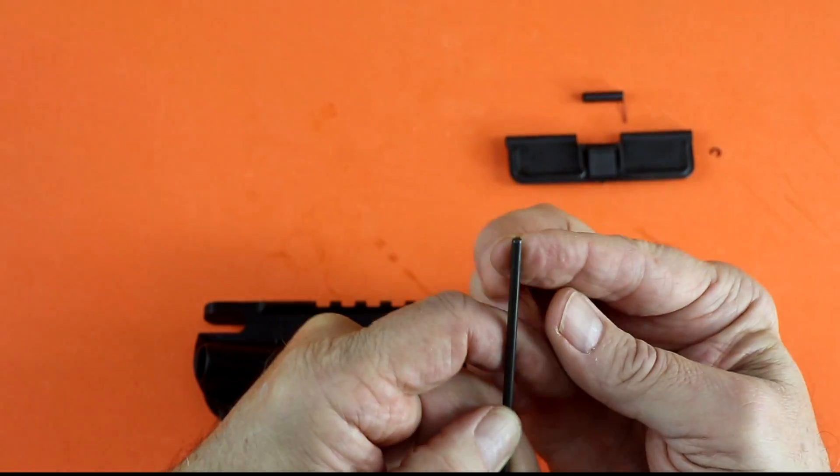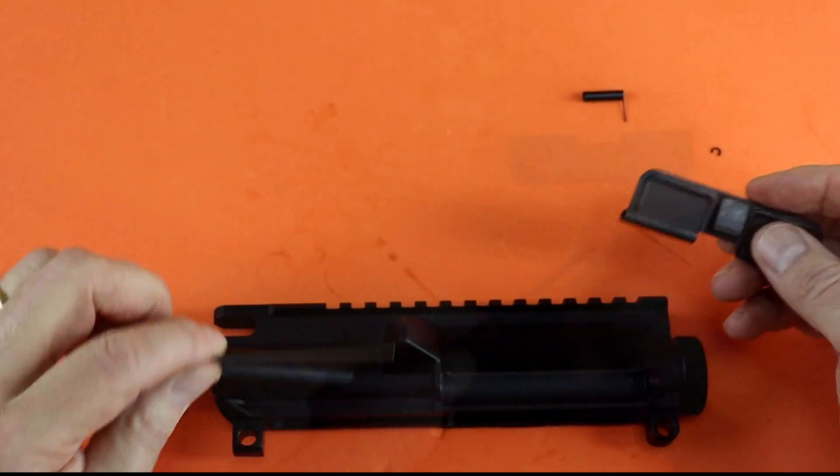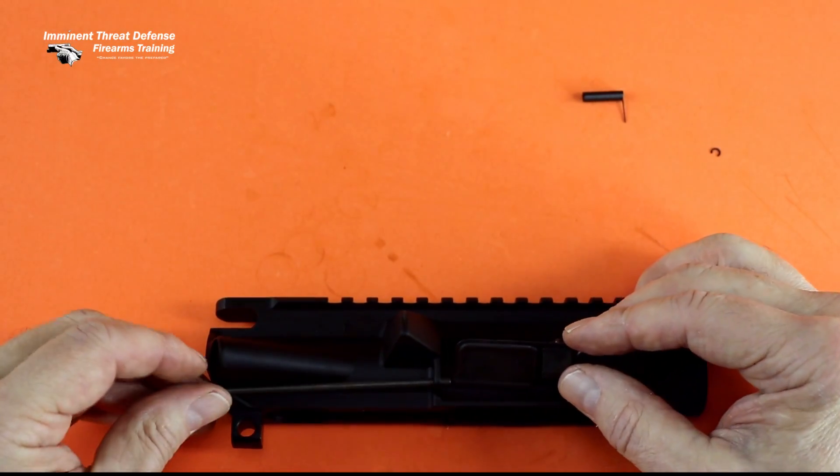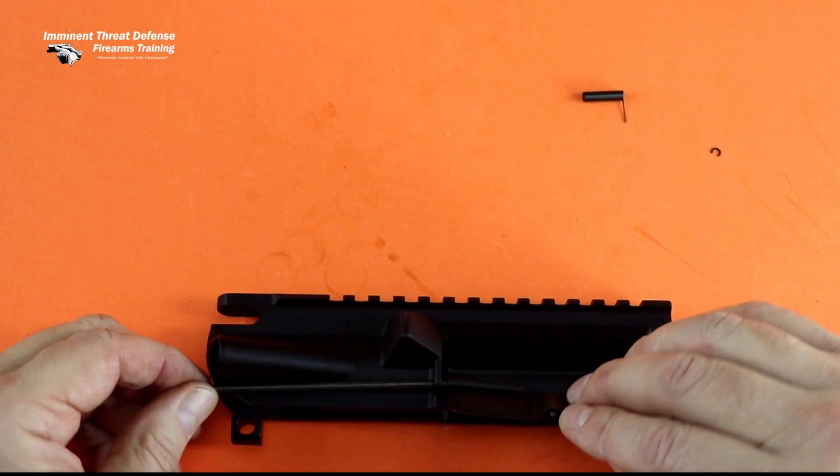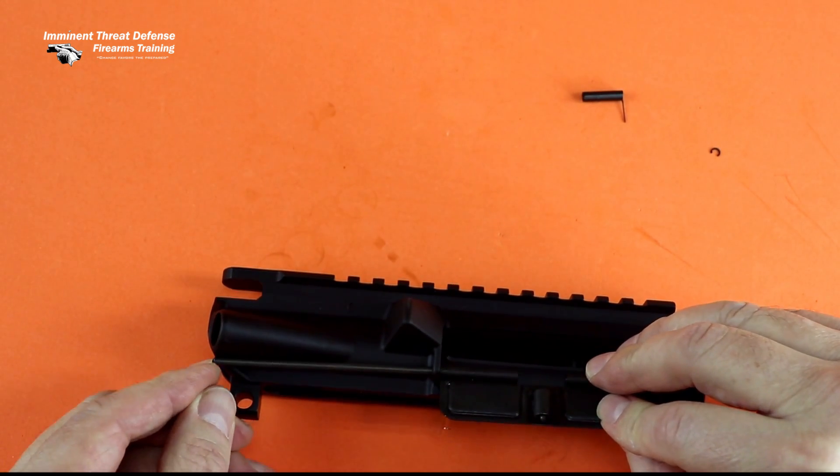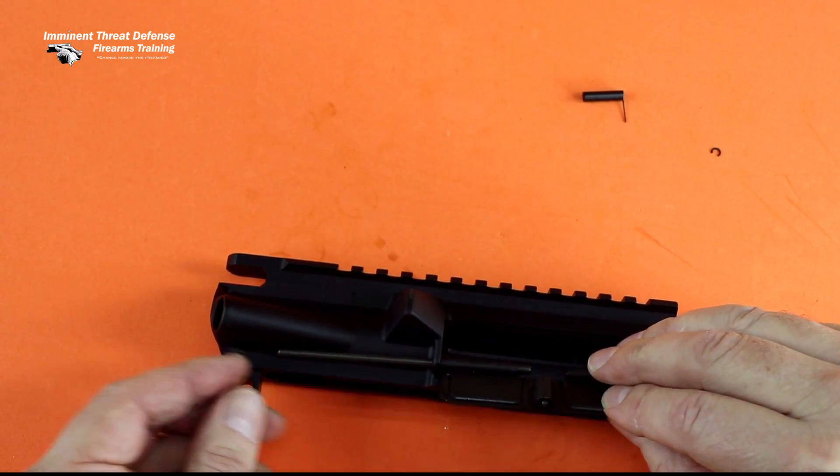So the ejection port cover has got this hinge pin. The end of it has got a groove cut in it for the E-clip. So that groove part goes to the forward part of the firearm. I'm going to insert the pin as if the barrel is attached from the rear end, and I get it through to the opening in the ejection port cover before I install the spring.